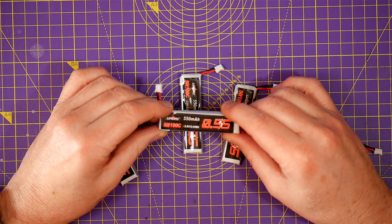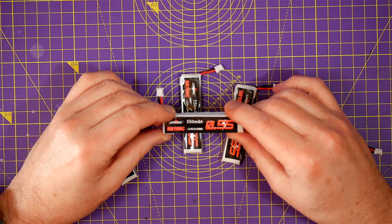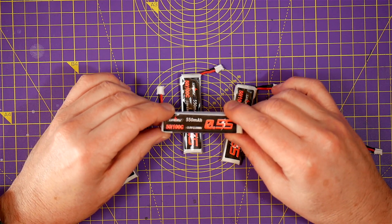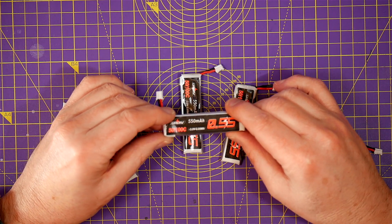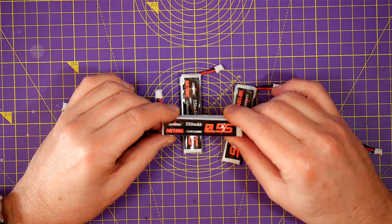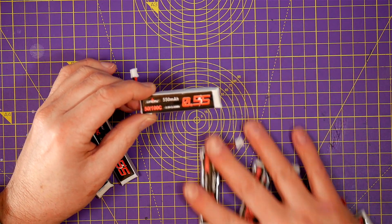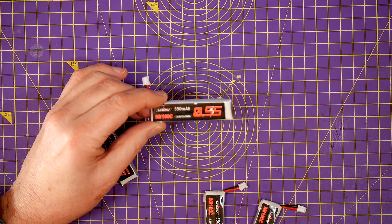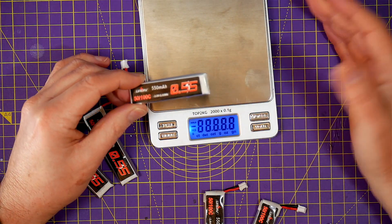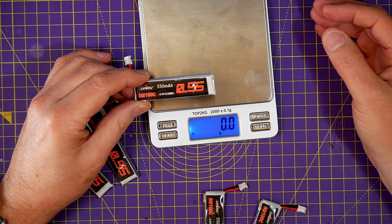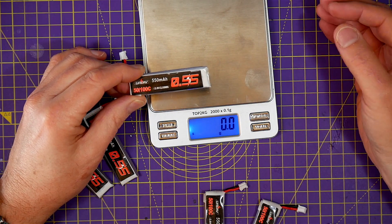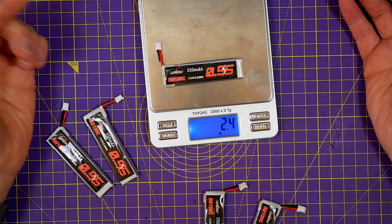But are they any good? Well, I've now flown the Mobula 7 as 2s using these and although they're a bit heavier at 14.2g per battery, about half a gram heavier than the 450mAh ones, I've seen on average another 30 to 60 seconds flight time. So they're pretty good really.